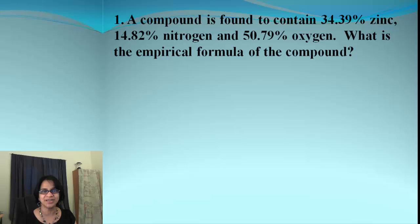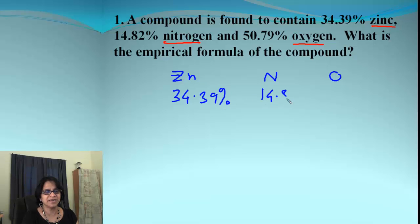Alright, let's begin actually our first problem. So we have three different elements. Zinc, nitrogen and oxygen. Let's list those here. Zinc, nitrogen and oxygen. So the very first thing is we begin with percent. What's the percent we got? We got 34.39 percent, 14.82 for nitrogen and we got 50.79 percent for oxygen.